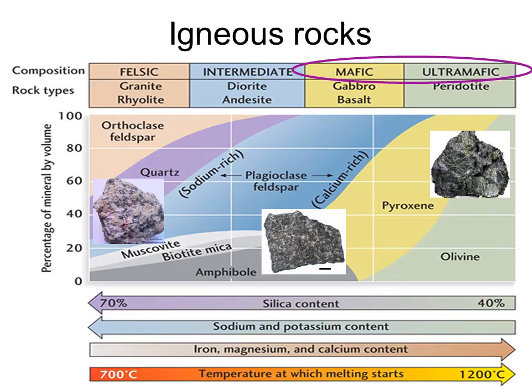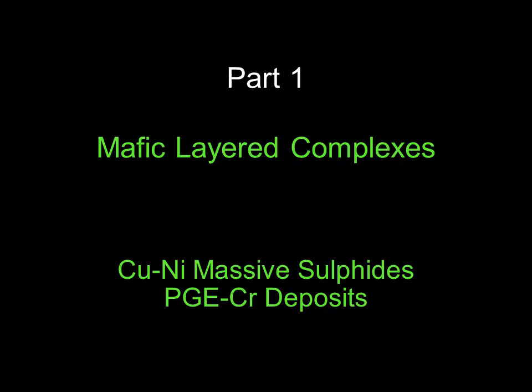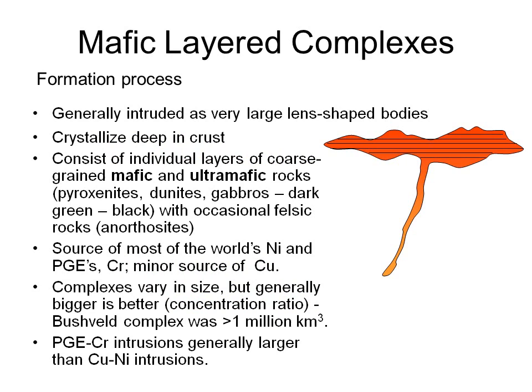Being mafic, these intrusions were emplaced at high temperatures and crystallized slowly, relatively deep in the crust. Mafic layered complexes are generally very large, pancake-shaped intrusions that, because of their high initial heat and deep burial, tend to cool slowly. This allows them to develop the alternating layers of coarse-grained mafic and ultramafic rocks — pyroxenes, dunites and gabbros.